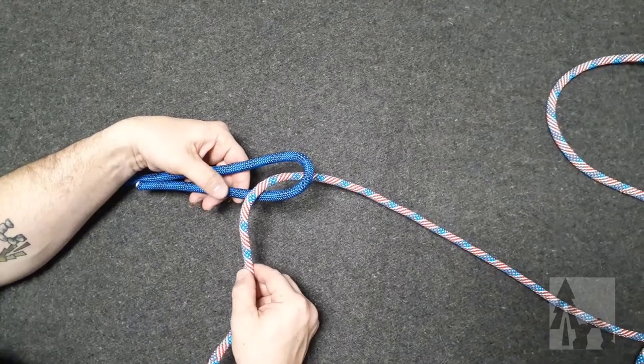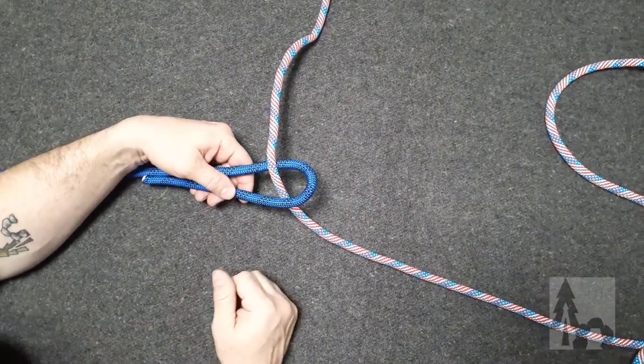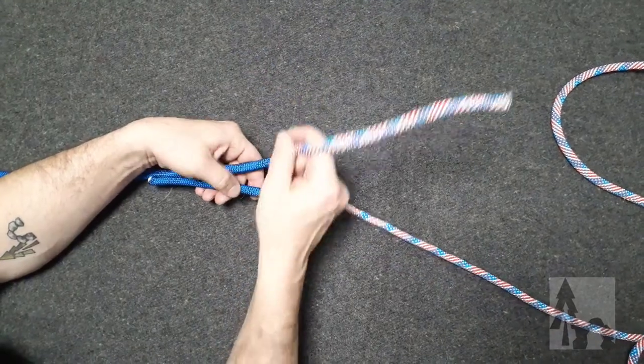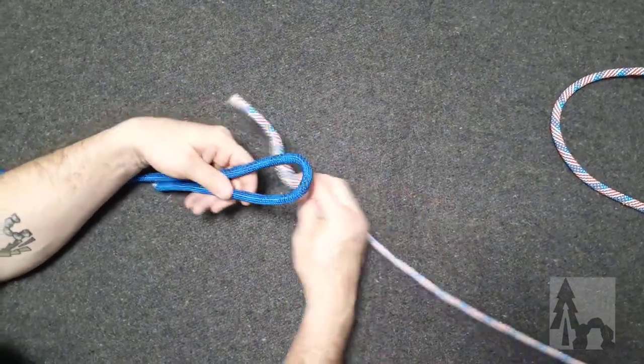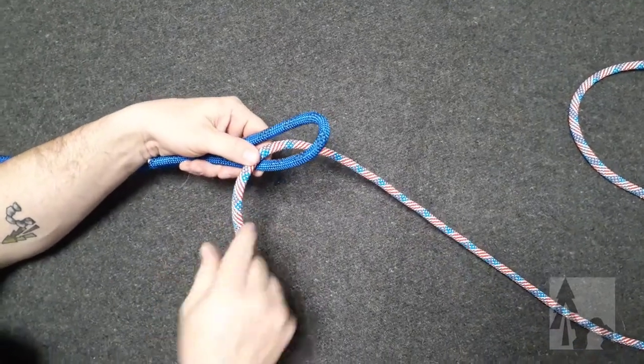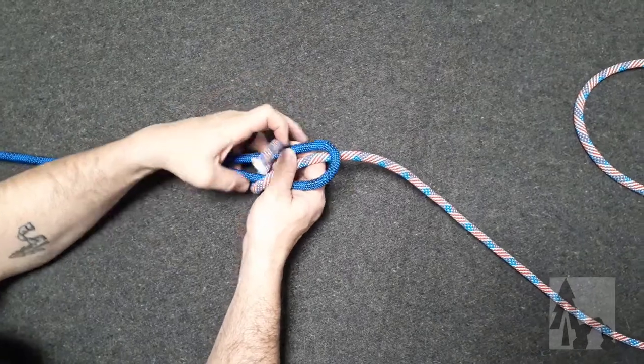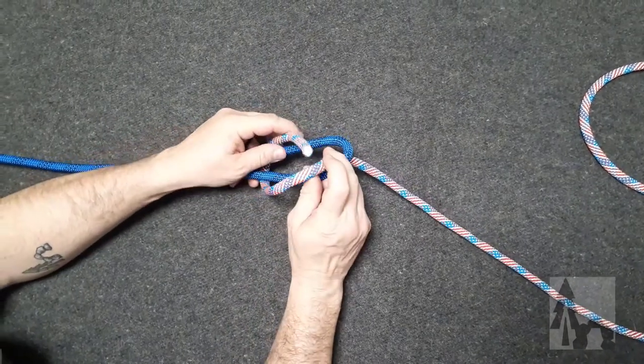If you go the other way, it'll hold, but it's more prone to collapse or capsizing. So I come up through the bight, bring that line toward me, I go under the bight, and then I'm going to pass that line under itself across the opening of the bight.